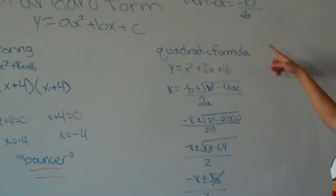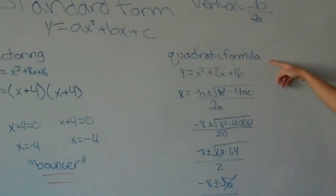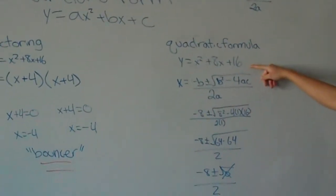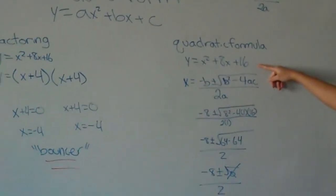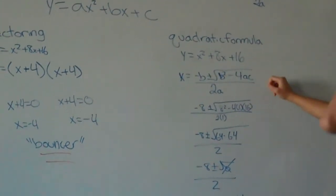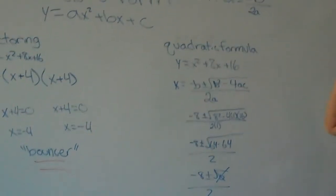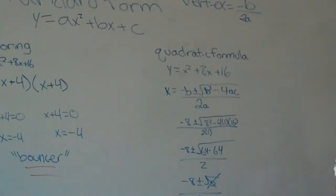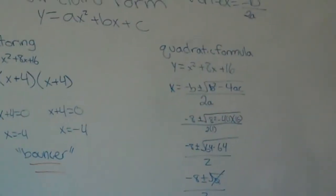The other way to do this is quadratic formula, which you're given the equation. The coefficient in front of the x squared will be your a, the 8 in this case will be your b, and in this case c will be 16.